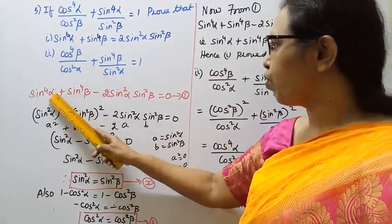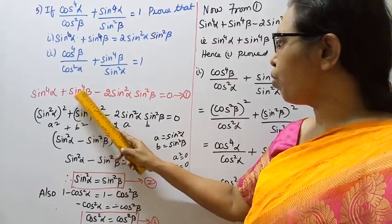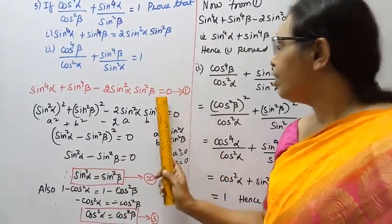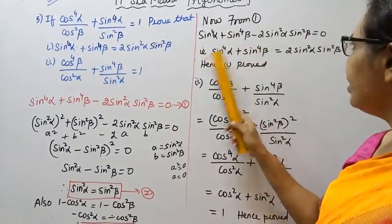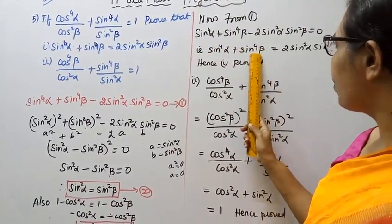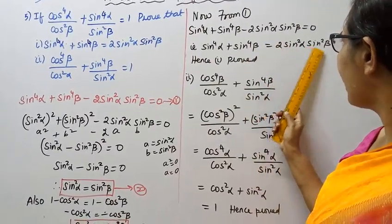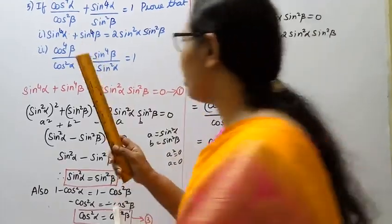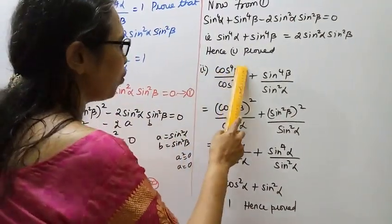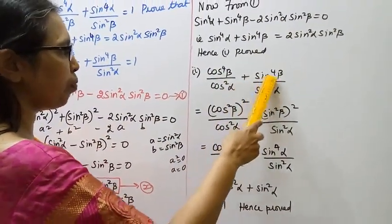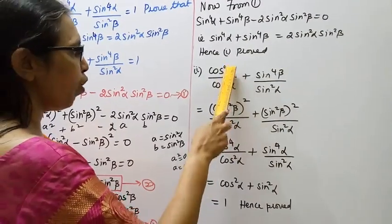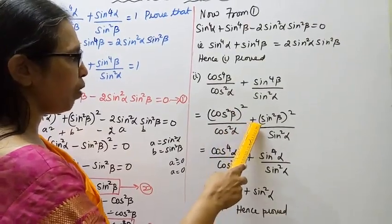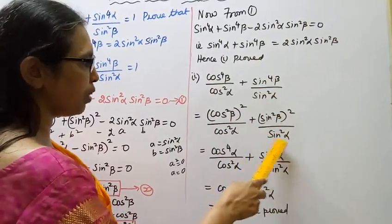First subdivision: sin power 4 alpha plus sin power 4 beta equal to 2 sin squared alpha sin squared beta. Hence subdivision 1 is proved. Second subdivision: cos power 4 beta by cos squared alpha plus sin power 4 beta by sin square alpha equals cos square beta the whole square by cos square alpha, plus cos square beta the whole square by sin square alpha.